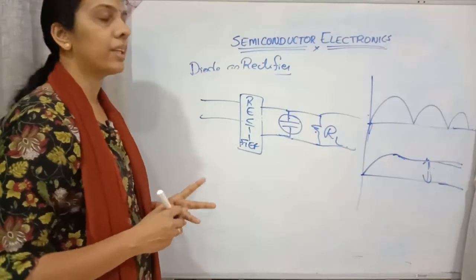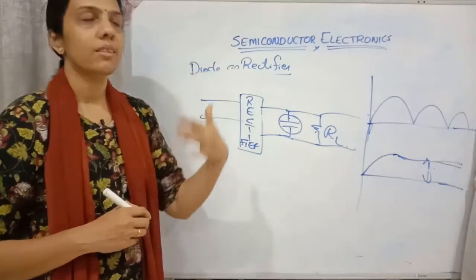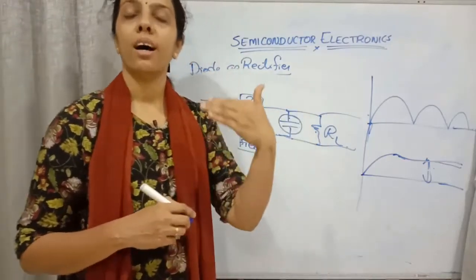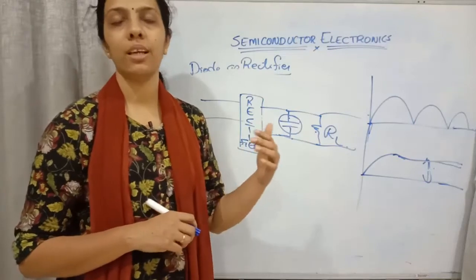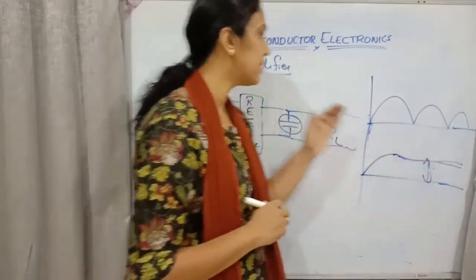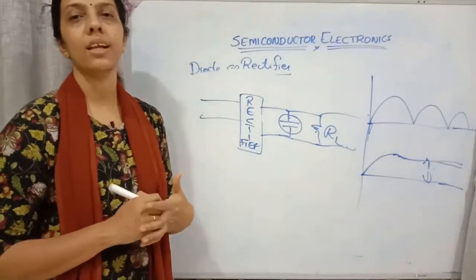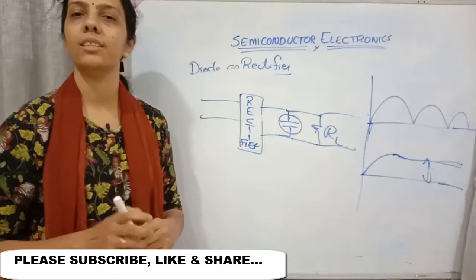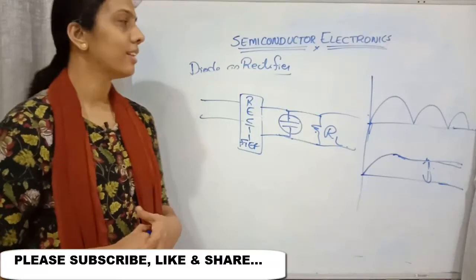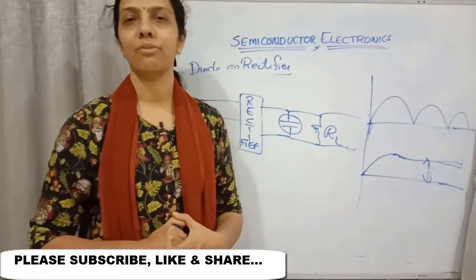This is how we convert the rectified output to unidirectional current. The capacitor does not allow DC to pass through it — it allows AC only. So if we connect a capacitor across the load resistance, we will be getting a perfect unidirectional current at the output. This is one of the applications of a diode used as a rectifier.